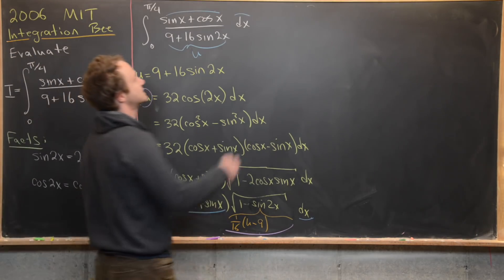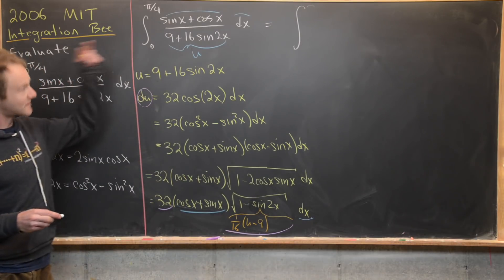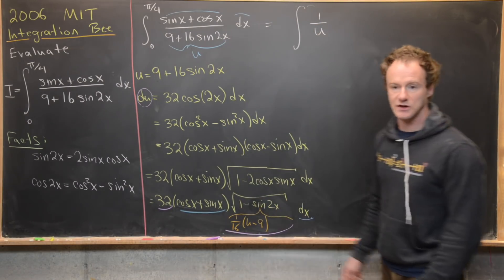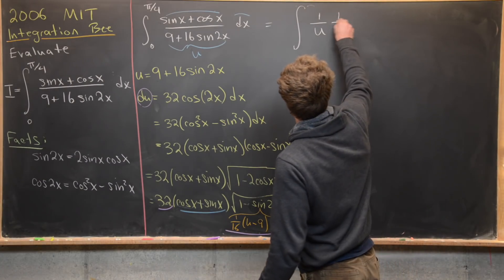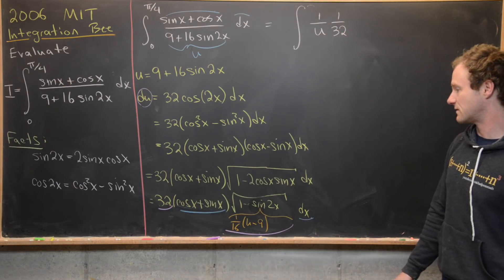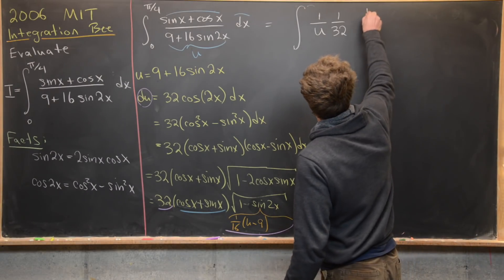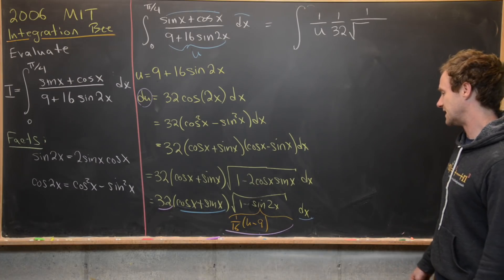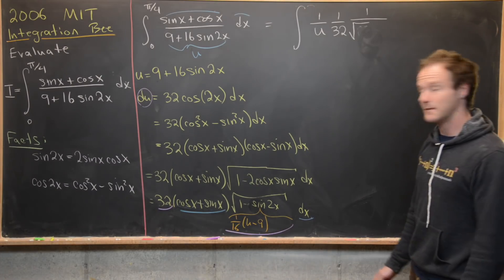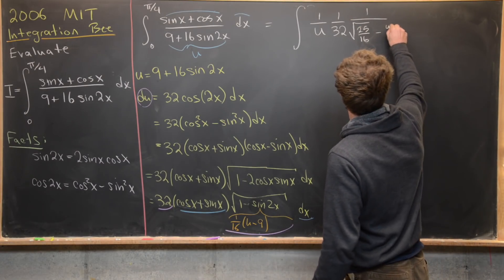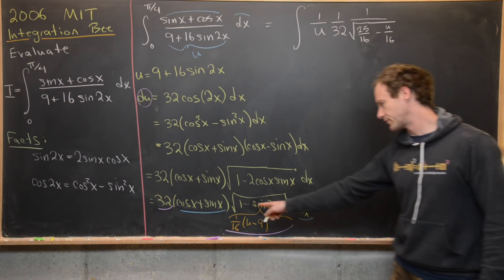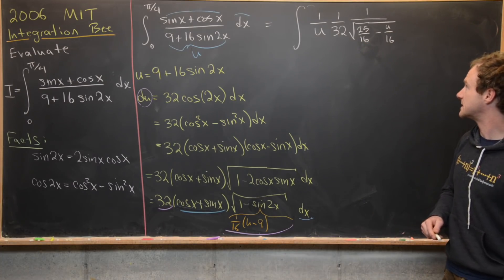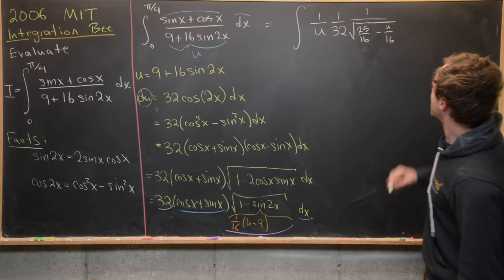So we get an integral with one over u from the denominator, times one over 32, times one over the square root of — well, 1 minus (1/16)(u minus 9) simplifies to 25/16 minus u/16 under the radical. That's because 1 equals 16/16, and we're subtracting negative 9/16, giving us 25/16. So now we can put a du here and we're in good shape.